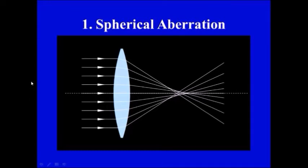So each point of the object instead of forming a single point here on the image side is going to form different points.